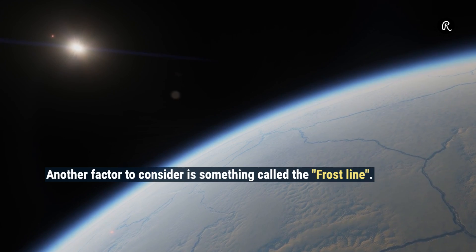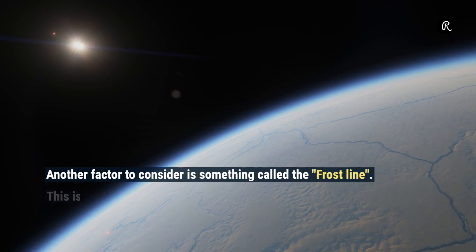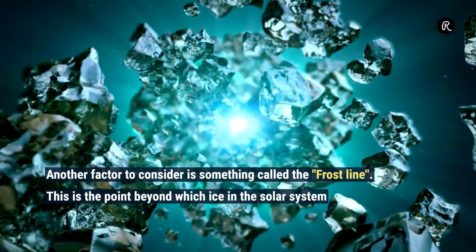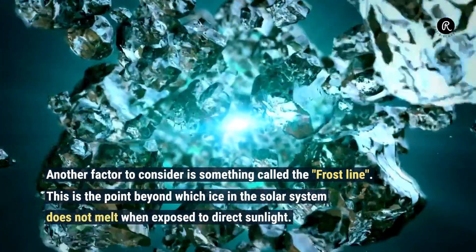Another factor to consider is something called the Frost Line. This is the point beyond which ice in the solar system does not melt when exposed to direct sunlight.